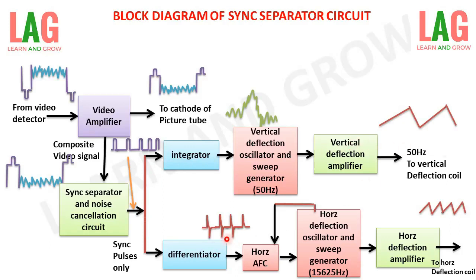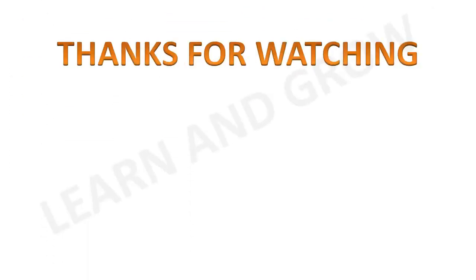To recap, the block diagram of this sync separator consists of eight blocks which perform individual operations: shifting, generating sync pulses, generating triangular pulses, generating spike pulses, and finally producing vertical and horizontal synchronizing pulses. This topic clearly explains the operations and basics of synchronizing pulses with the help of this block diagram. Thank you for watching.